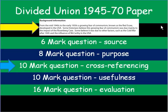Welcome to this third part of the divided union paper, where I'll be walking you through a 10-mark question on cross-referencing — the third question. This is in many ways one of the trickiest questions; it's very difficult to get 10 marks out of 10. I'll show you how you can do that, but I'd also be happy if you get 7 out of 10 on this one and move on.